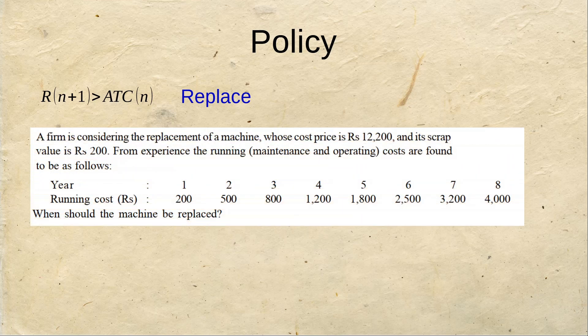Let's take up a problem. A firm is considering the replacement of a machine whose cost price is rupees 12,200 and its scrap value is rupees 200. Scrap value is also known as the salvage value. It is the value which you get after the machine has come to its end and you have to sell it off to get some value out of it. From experience the running costs are found to be as follows: year 1 is 200, year 5 is 1800 and year 8 is 4000 rupees. When should the machine be replaced?